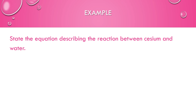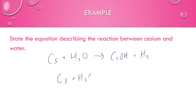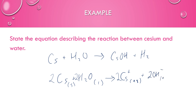Let's look at a few examples. First: state the equation describing the reaction between cesium and water. Cesium is an alkali metal, so it forms cesium hydroxide and hydrogen gas. Balancing the equation, we get two cesium ions and two hydroxide ions in solution, with hydrogen gas emitted. That is the reaction of an alkali metal with water.